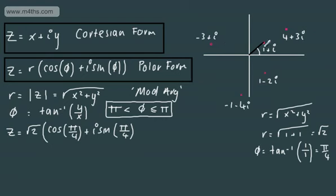In Cartesian form, it would be x plus iy. So this one in Cartesian form, in x plus iy, would just be 1 plus i. There we go. Cartesian form, polar form.